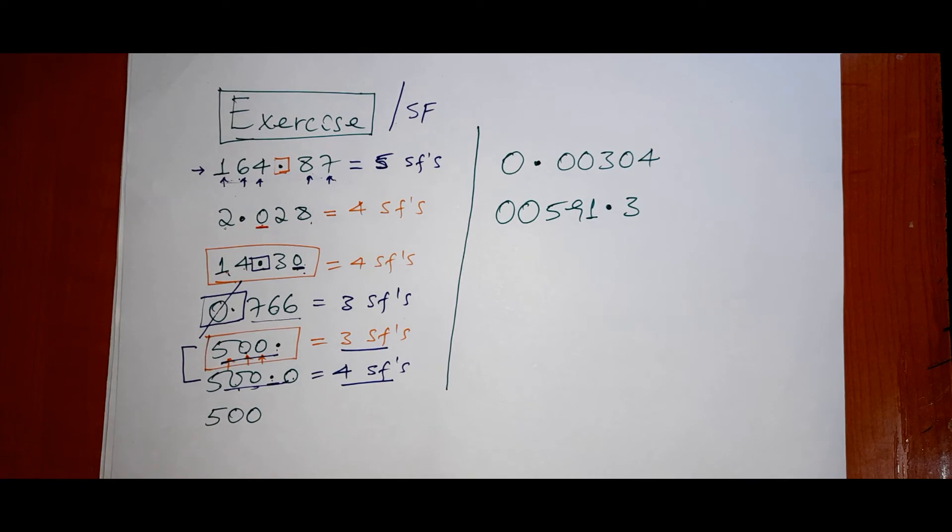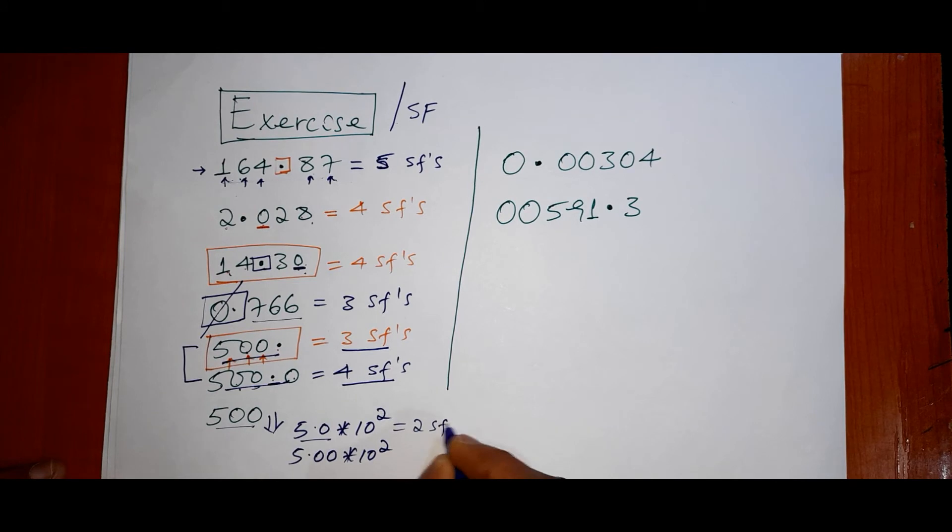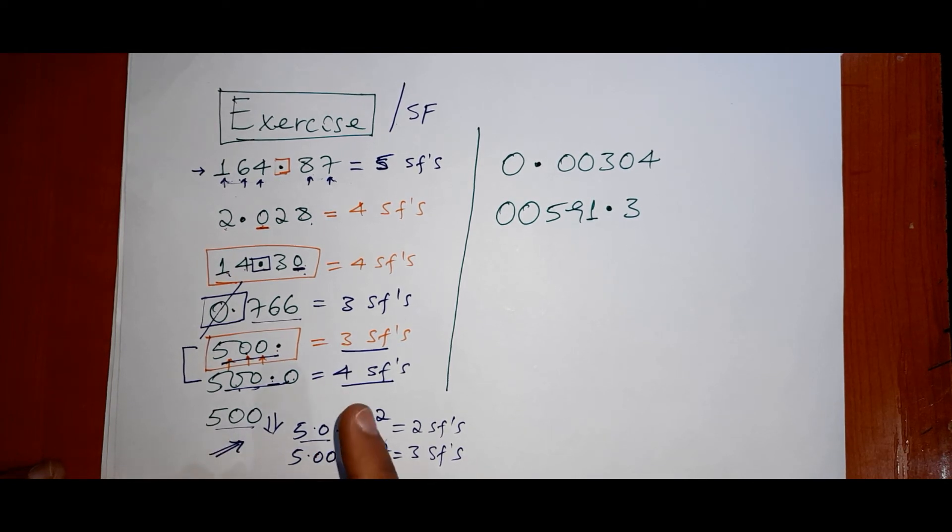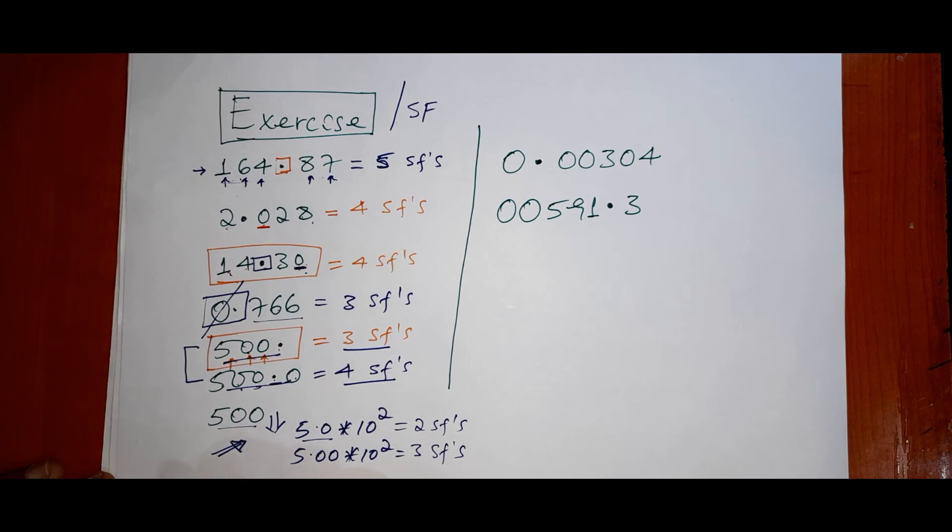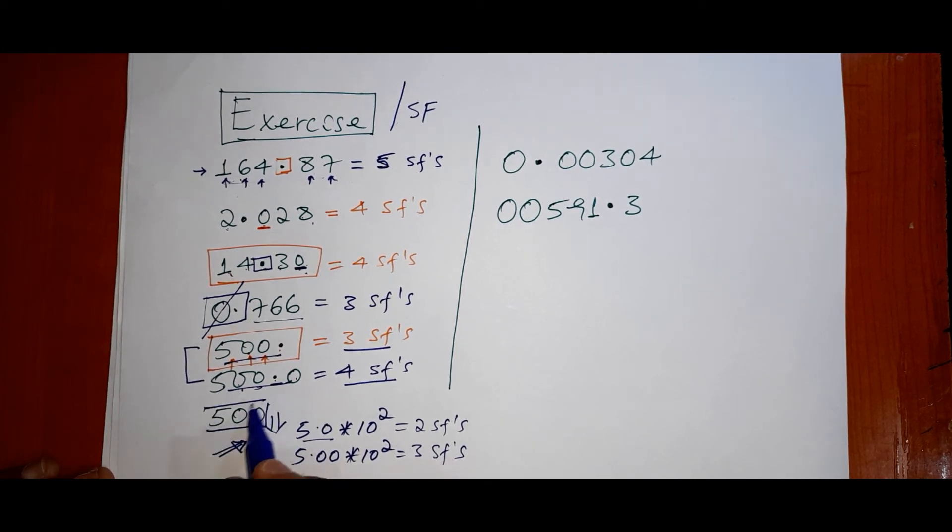This one depends on the recommended textbook. So by using scientific notation we can count the significant numbers: 5.0 times 10^-2 or 5.00 times 10^-2. The recommended textbook for freshman course in physics will tell you how many significant figures to use.